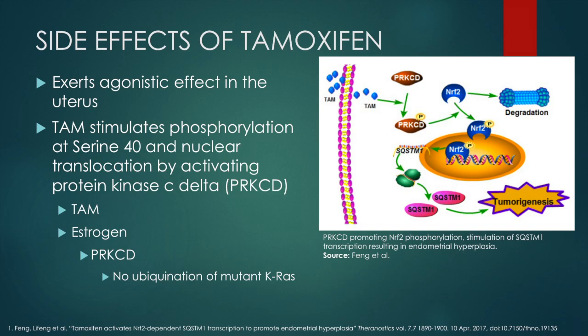Tamoxifen in the uterus acts as an agonist. Agonists, as we recall, are able to bind to the receptor and induce an effect. In a paper published last year, it showed that in the uterus, tamoxifen stimulates phosphorylation at serine-40 on transcription factor NRF2, and it stimulates nuclear translocation by activating protein kinase C-delta. Estrogen also activates protein kinase C-delta and prevents ubiquitination of mutated KRAS protein, which is basically an on-and-off switch that controls cell proliferation. Preventing ubiquitination of a mutated KRAS is not a good thing if either estrogen or tamoxifen is present.